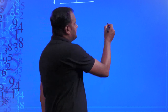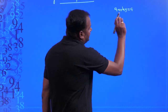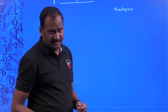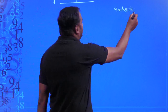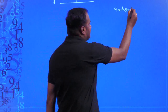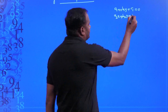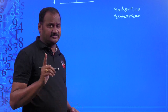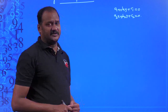For the cross-multiplication method, we start with the standard form of linear equations in two variables. The equations must be in standard form: a1x + b1y + c1 = 0 and a2x + b2y + c2 = 0. Ensure that the given linear equations are written in this standard form.